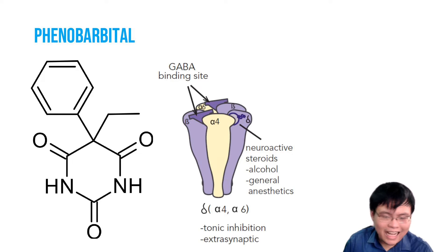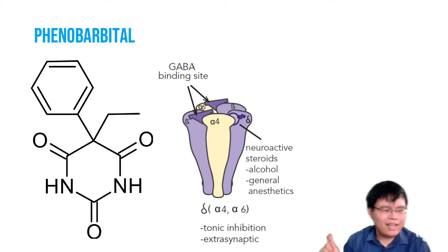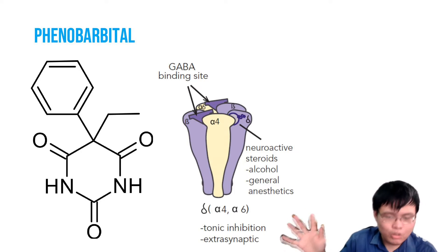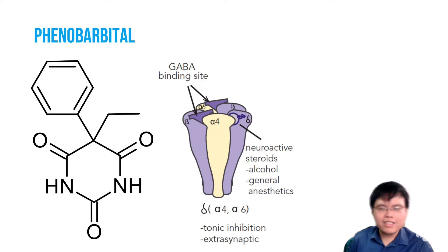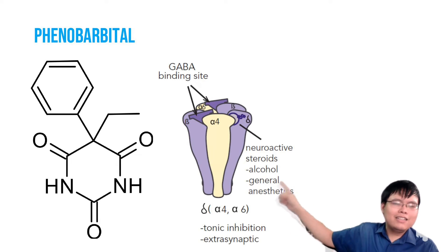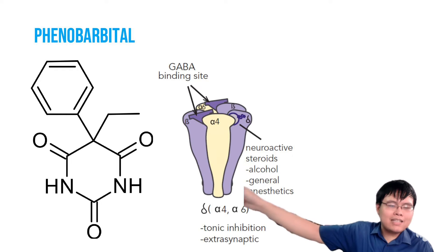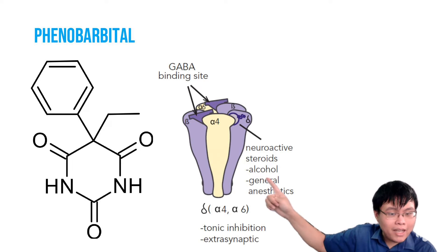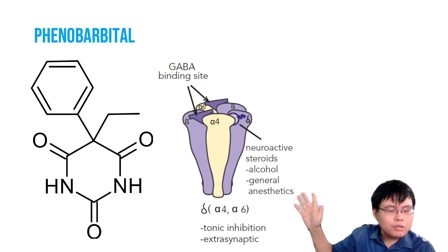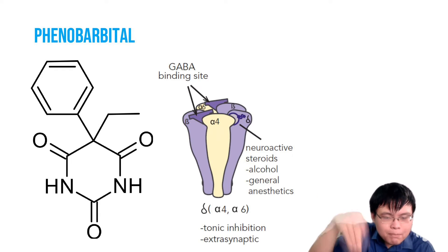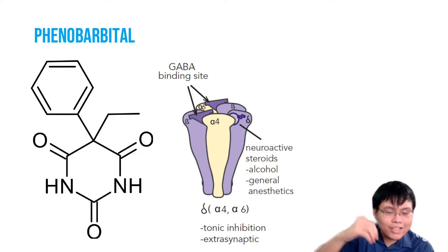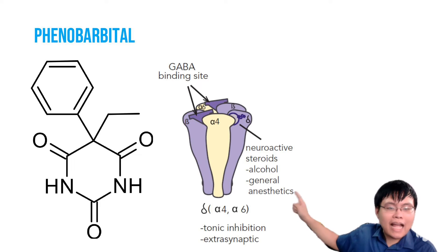Phenobarbital is GABAergic, but unlike benzos — here's a mnemonic I came up with. If you want to remember the difference between how phenobarbital and benzos work on the GABA receptor: phenobarbital, the 'tal' stands for 'tagal.' It prolongs the opening of the GABA receptor. The GABA receptor has five subunits that form a chloride ion channel. Phenobarbital goes deep inside the ion channel and prolongs its opening.